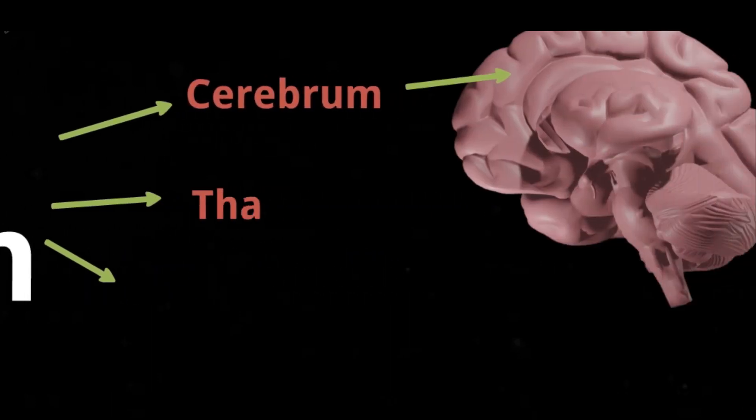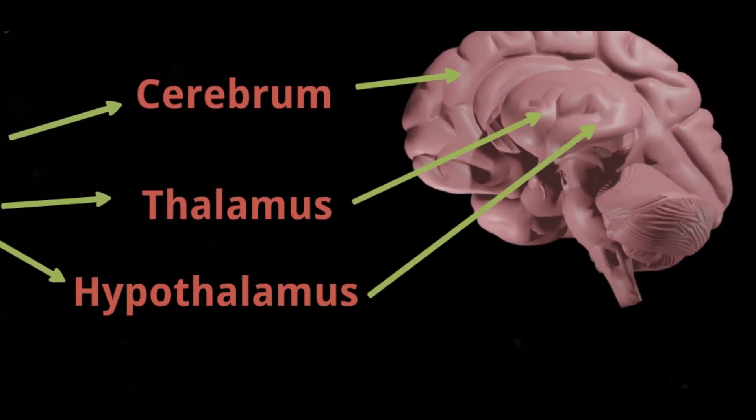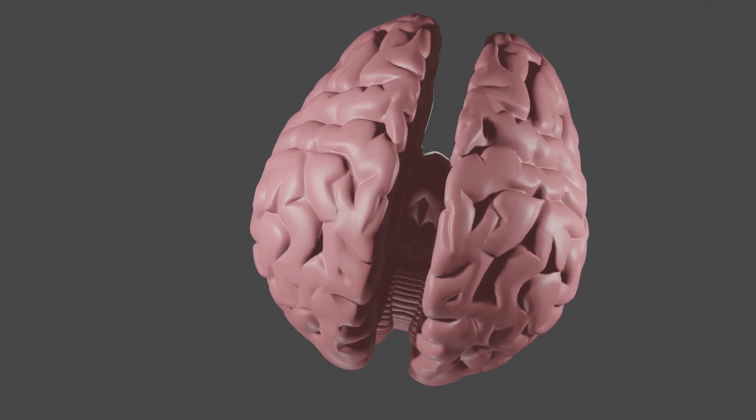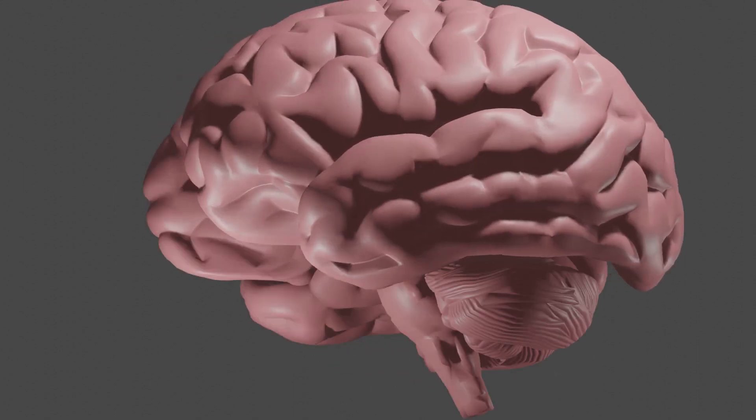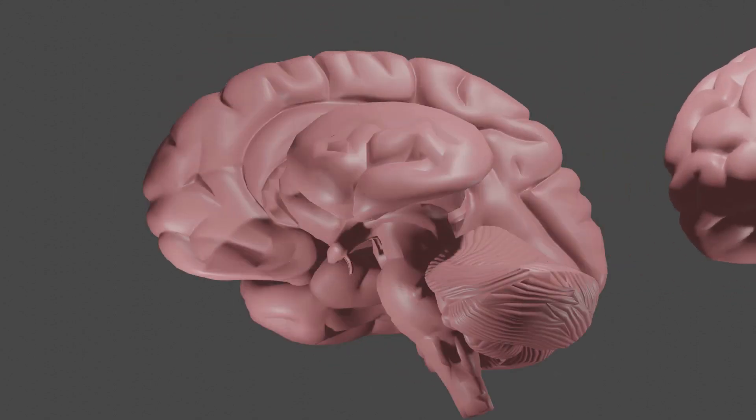The forebrain is the largest part of the brain. It consists of three main parts: cerebrum, thalamus, and hypothalamus. The cerebrum is the topmost and largest part of the brain. It is divided into right and left cerebral hemispheres.